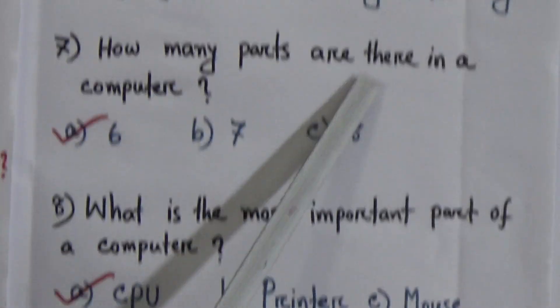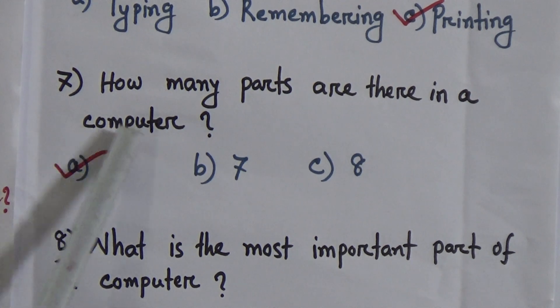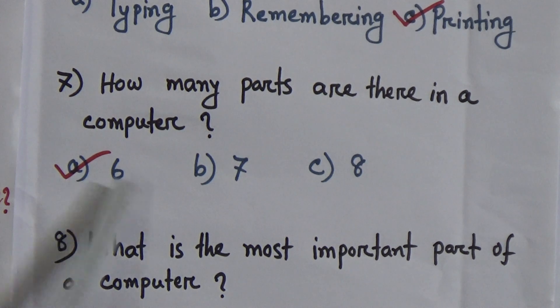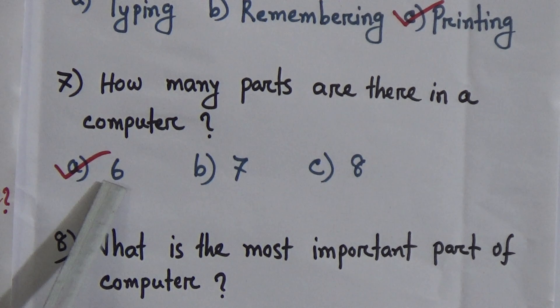7. How many parts are there in a computer? We know that there are 6 main parts in a computer. So, A: 6, B: 7, C: 8. The answer will be A, 6.